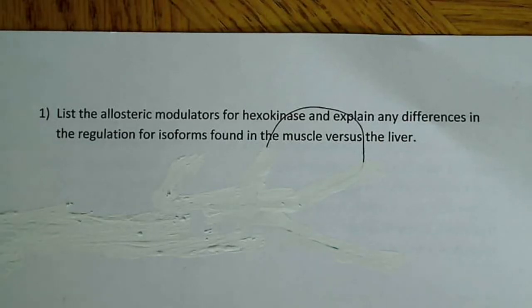Okay, I want to work a problem involving enzyme kinetics and the glycolysis pathway. So what the problem says is list the allosteric modulators for hexokinase and explain any differences in the regulation for isoforms found in the muscle versus the liver.